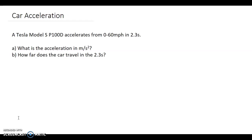This is an example where we can look at a car's zero to 60 time. In this case, we're going to look at the Tesla Model S P100D.